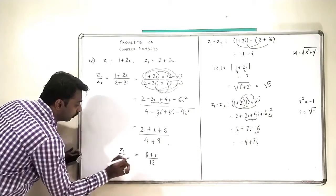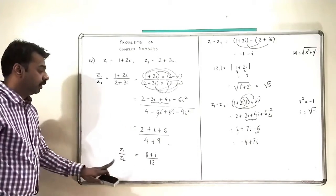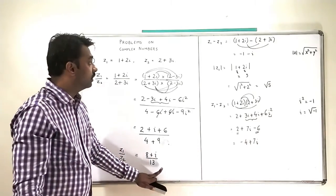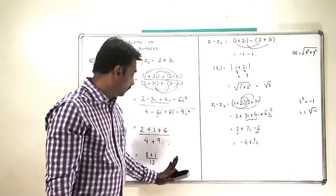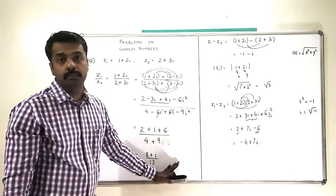So I am going to get 8 plus i divided by 13. This is the answer of Z1 upon Z2. So this finishes our video here.